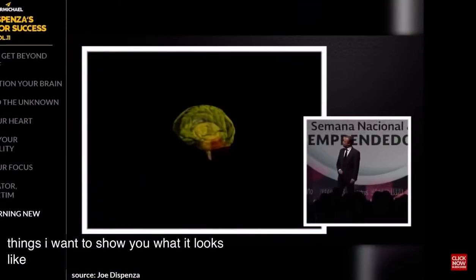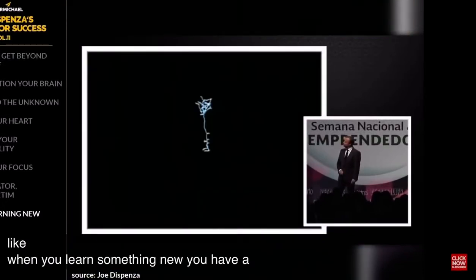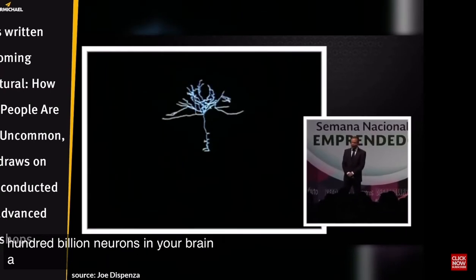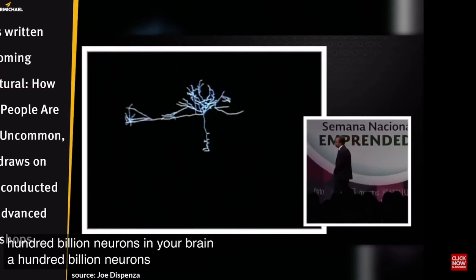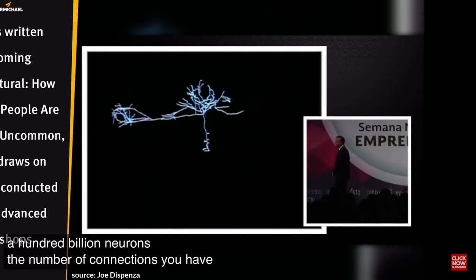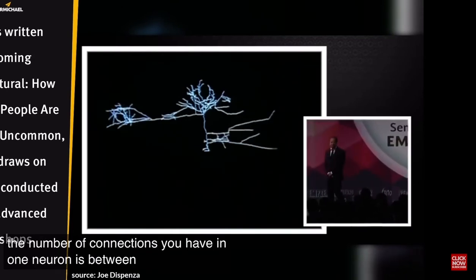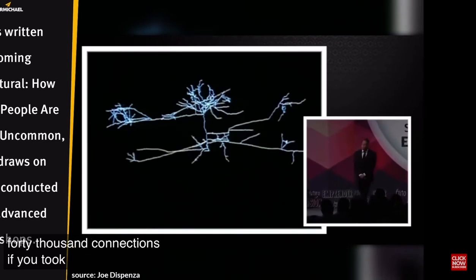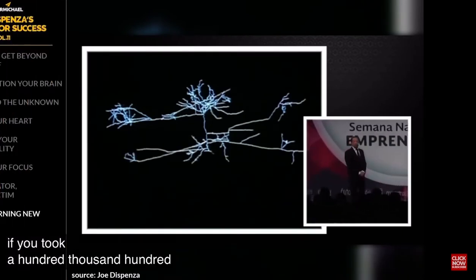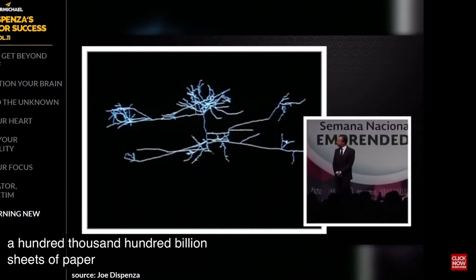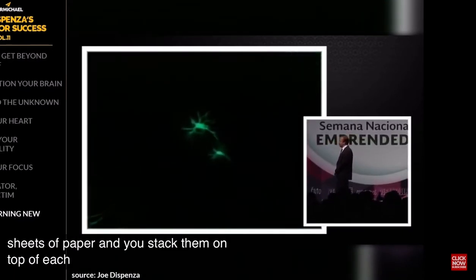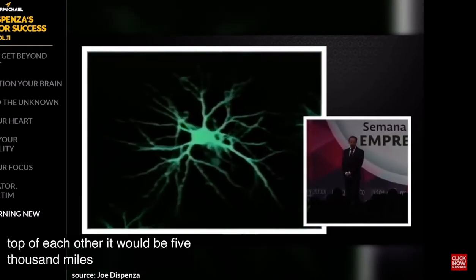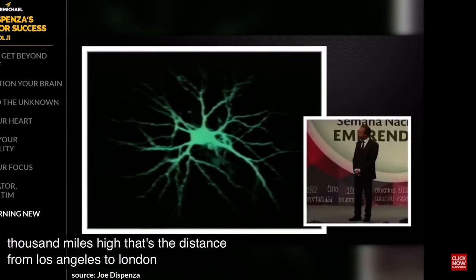I want to show you what it looks like when you learn something new. You have 100 billion neurons in your brain — 100 billion neurons. The number of connections you have in one neuron is between 10,000 and 40,000 connections. If you took 100 billion sheets of paper and you stacked them on top of each other, it would be 5,000 miles high — that's the distance from Los Angeles to London.